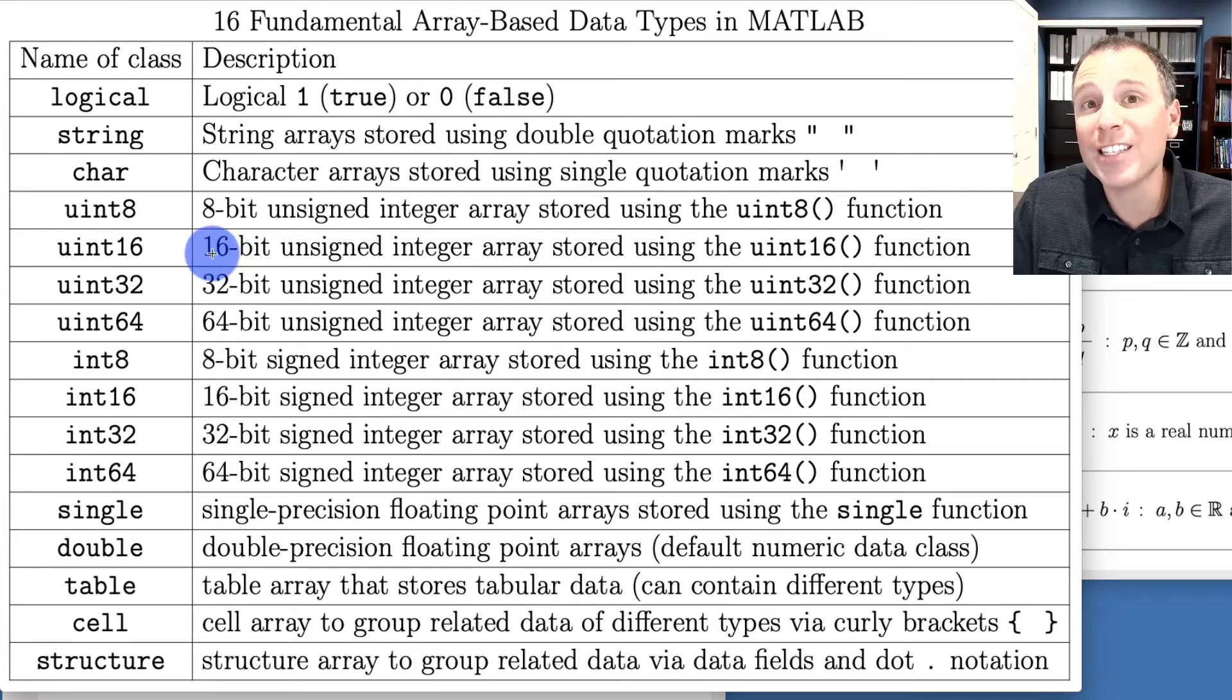In MATLAB, there are four unsigned integer classes, that is uint8, uint16, uint32, and uint64. The acronym uint stands for unsigned integer, and then the number 8, 16, 32, 64, indicates the number of bits dedicated to that data class. So uint8 represents unsigned integers stored using eight bits of memory. Similarly, uint32 encodes unsigned integer data with 32 bits of memory.